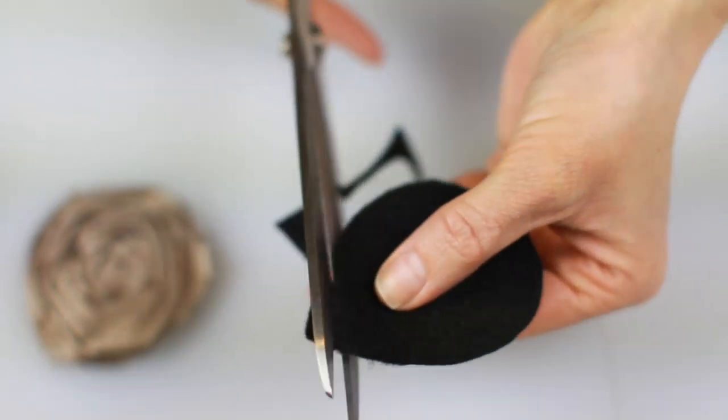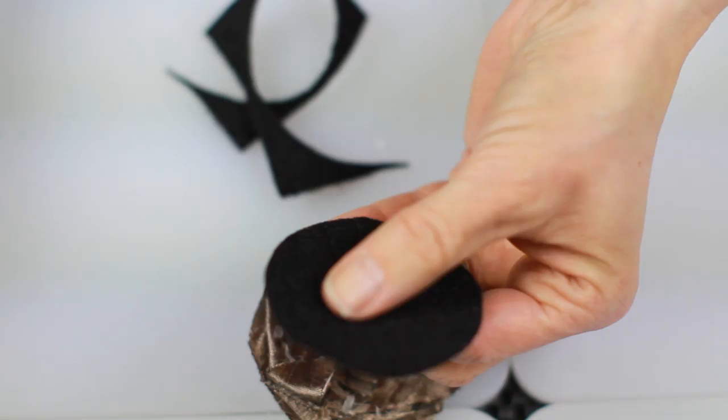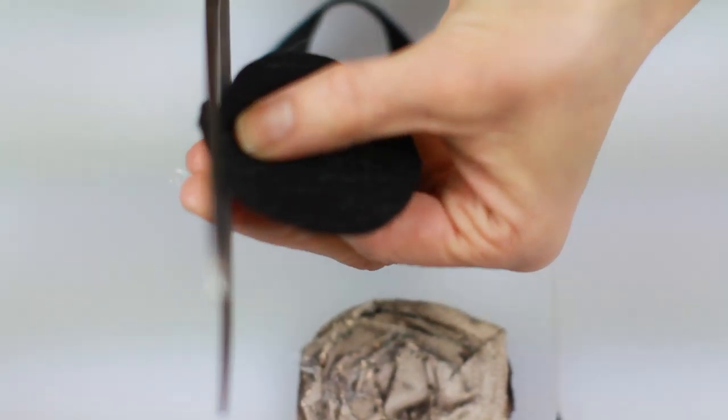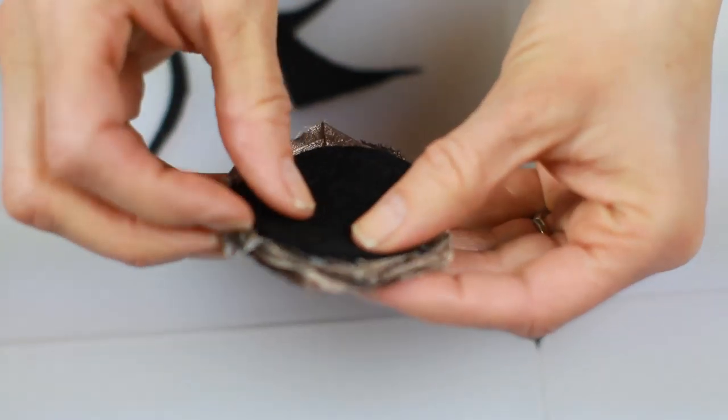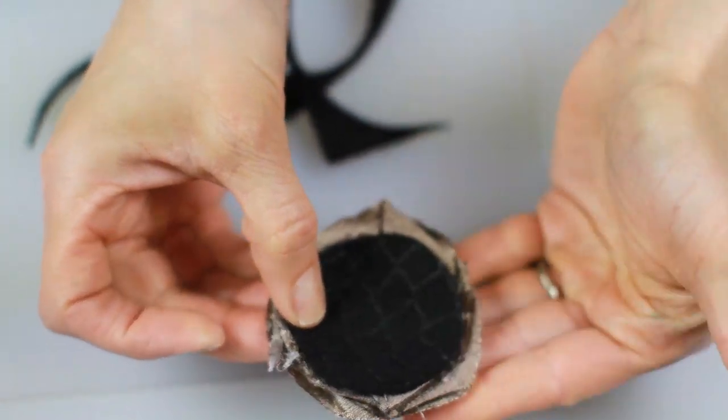Once you've got that done, you're going to line the back with some glue and place it on the back of your flower.